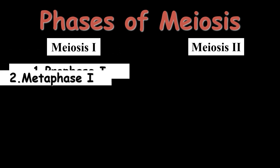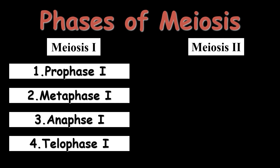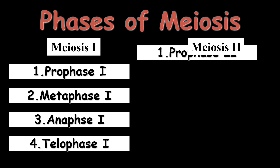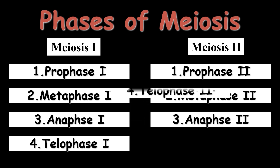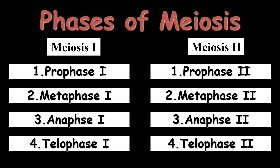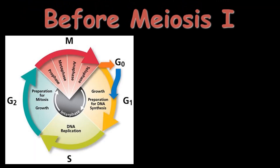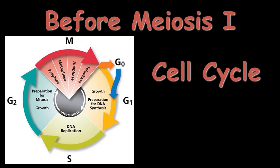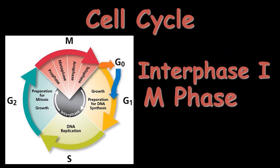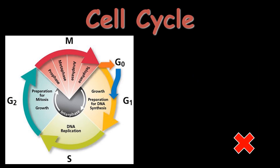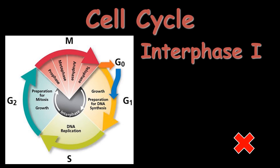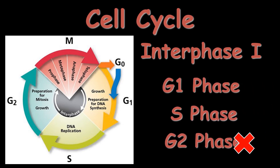Let's learn about the phases of meiosis in detail. Meiosis is divided into two stages — Meiosis 1 and Meiosis 2. Each stage has further phases. Meiosis 1 has Prophase 1, Metaphase 1, Anaphase 1, and Telophase 1. Meiosis 2 has Prophase 2, Metaphase 2, Anaphase 2, and Telophase 2. Before Meiosis 1, the cell must pass through the cell cycle, which has two main phases: interphase and M phase. Interphase 1 is further divided into G1 phase, S phase, and G2 phase — though G2 phase does not take place in Interphase 1 of Meiosis 1.